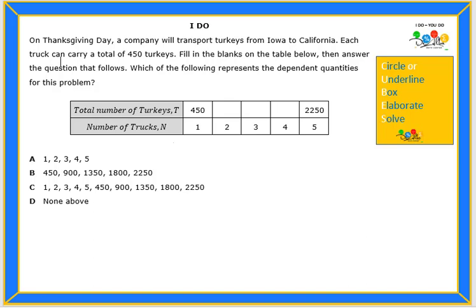Let's start by reading the I Do problem. On Thanksgiving Day, a company will transport turkeys from Iowa to California. Each truck can carry a total of 450 turkeys. Fill in the blanks on the table below, then answer the question that follows, which of the following represents the dependent quantities for this problem.